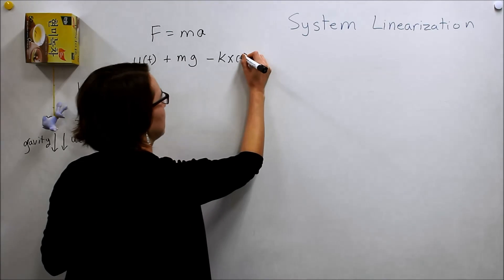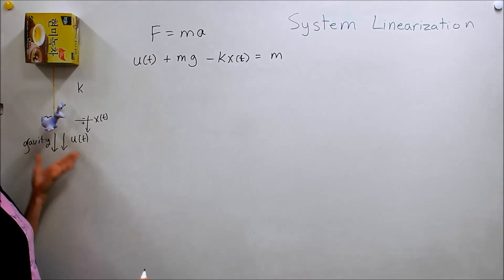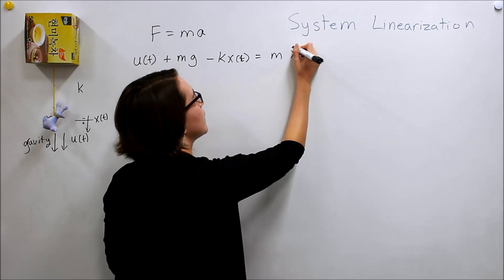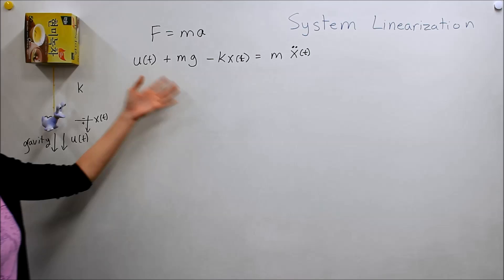So, those are our forces. Not too bad. And now, the other side, we have m, the mass of Valerie. And the acceleration, which again is just the double derivative of the position. So, here's our very basic equation.